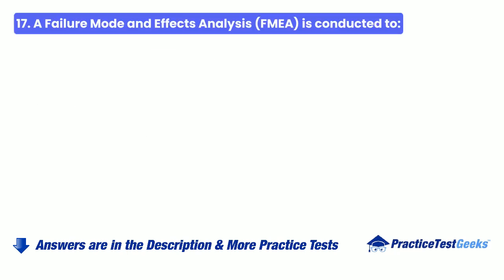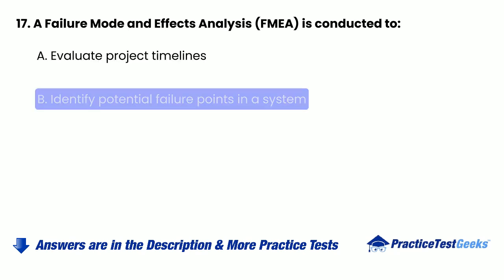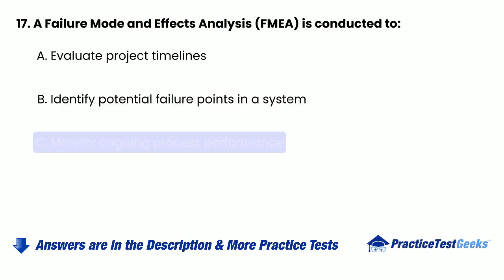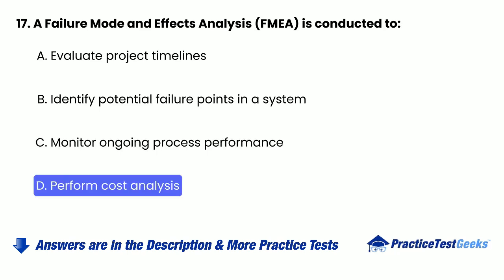17. A failure mode and effects analysis (FMEA) is conducted to: a. Evaluate project timelines. b. Identify potential failure points in a system. c. Monitor ongoing process performance. d. Perform cost analysis.